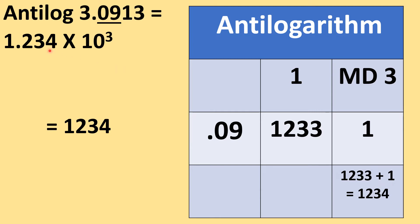This 1234 you write as 1.234, placing the decimal after the first digit from the left. Then write into 10 raised to the power of the characteristic. Here the characteristic is 3, so the number becomes 1.234 into 10 raised to the power 3. Working that out gives 1234. Thus anti-log of 3.0913 is 1234.